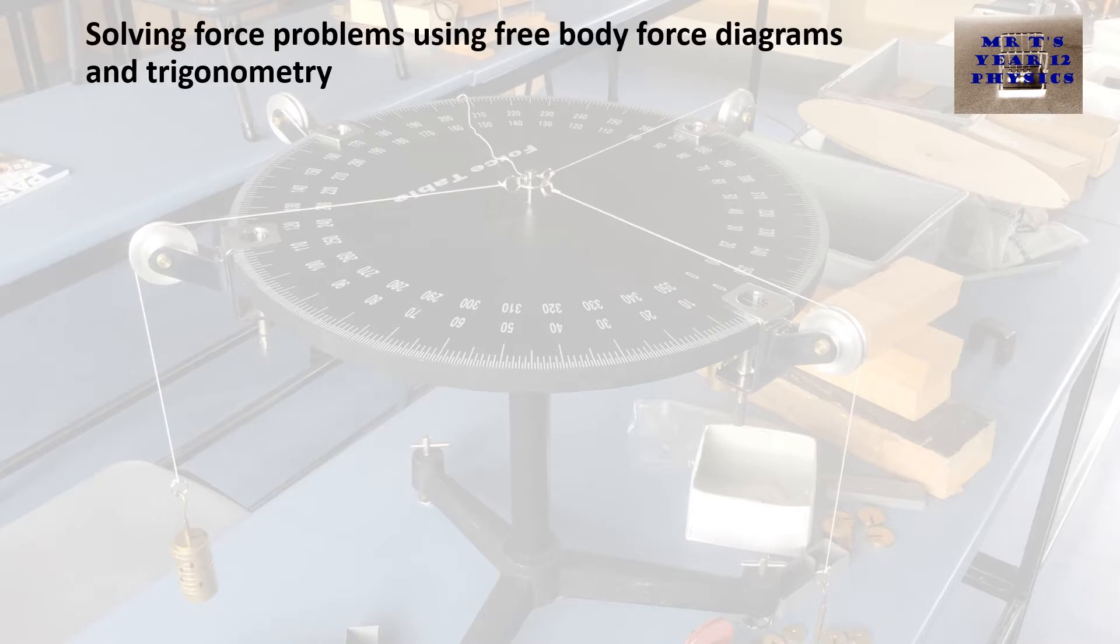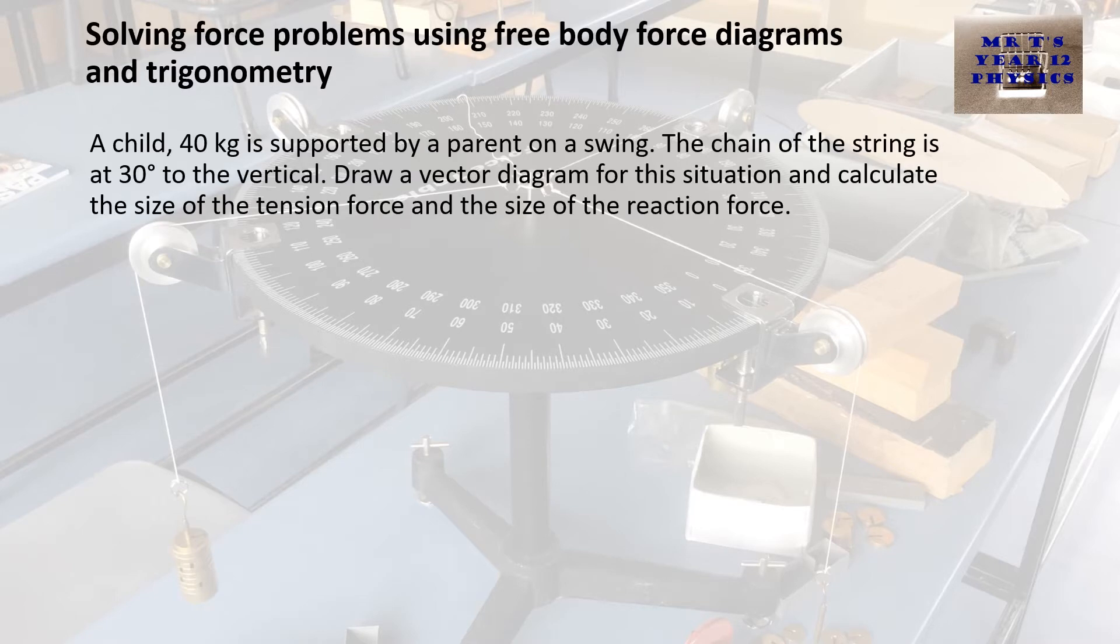So here's an example of a problem. We have a child, 40 kg, supported by a parent on a swing. The chain of the string is at 30 degrees to the vertical. Draw a vector diagram for the situation and calculate the size of the tension force and the size of the reaction force.